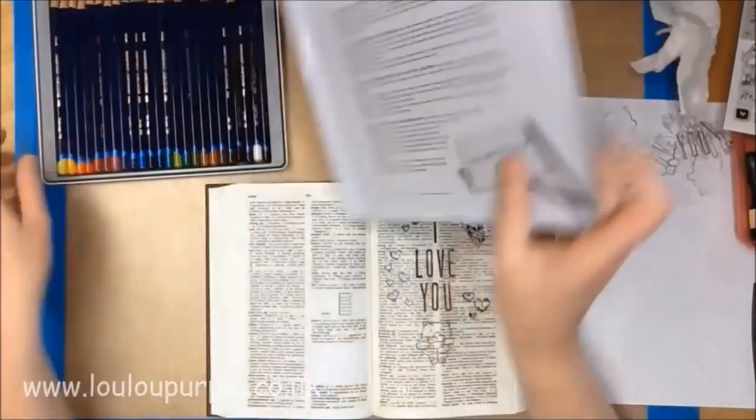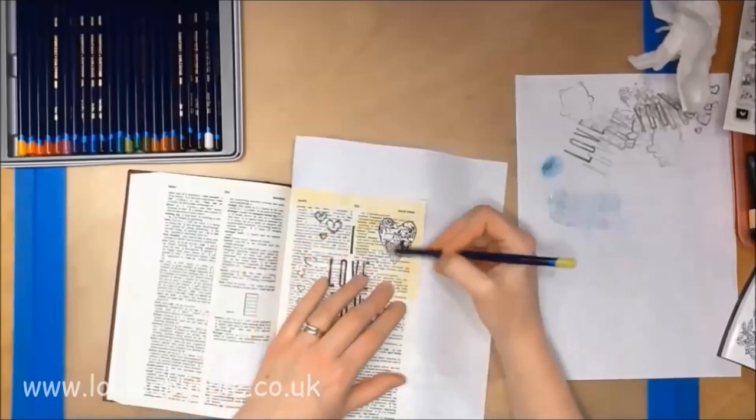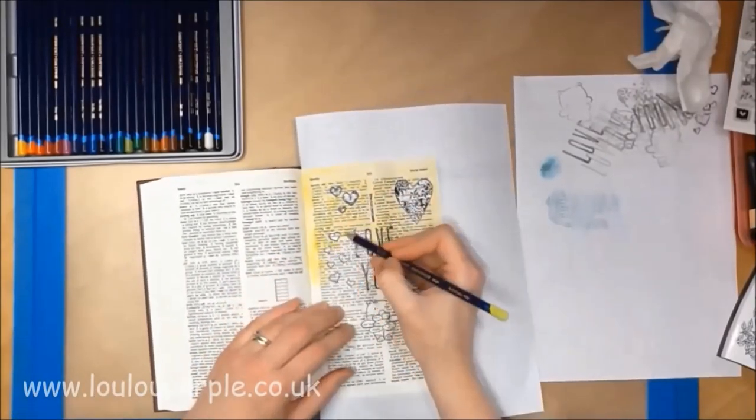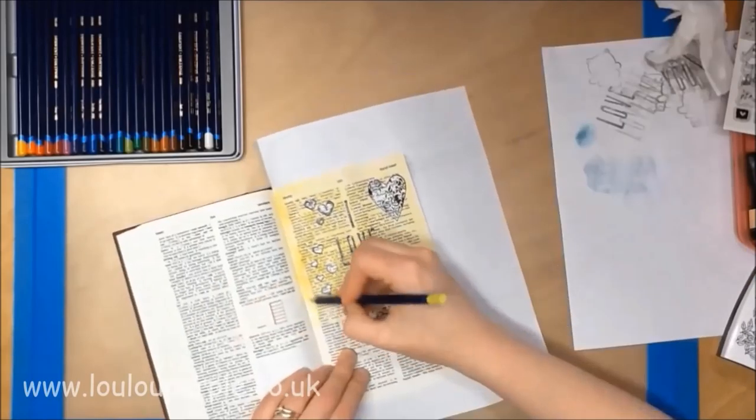I am now going to be using my Derwent Inktense pencils. This is a pencil which you can apply to the page. Once you've done this, you just add water and it turns to an ink.